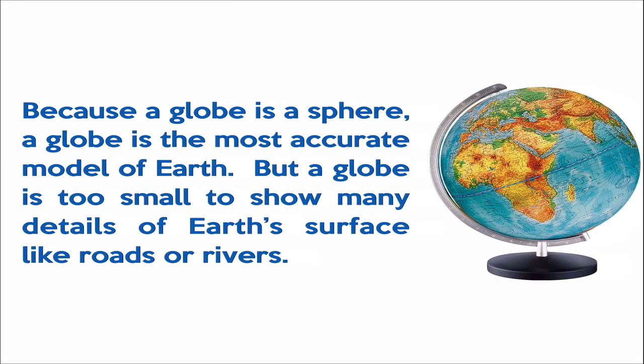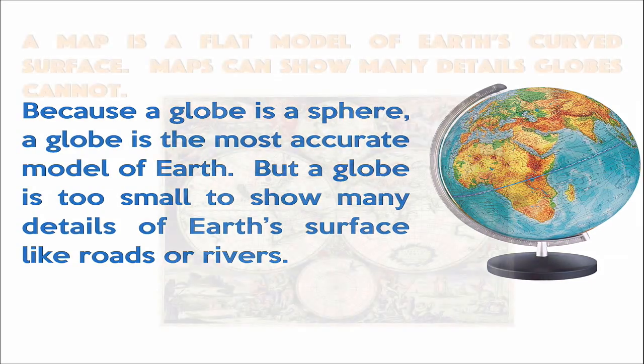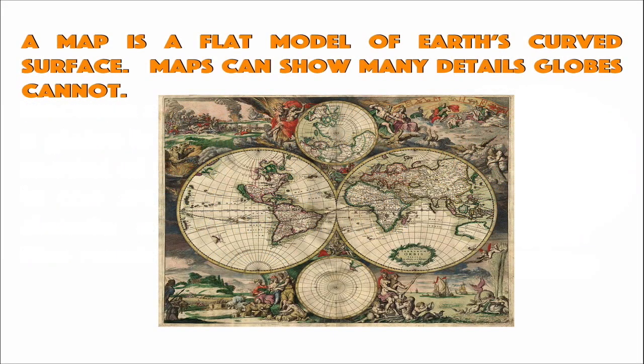Because a globe is a sphere, a globe is the most accurate model of earth, but a globe is too small to show many of the details on earth's surface like roads or rivers. For that we rely on a map, and a map is a flat model of earth's curved surface. Maps can show many details that globes cannot.